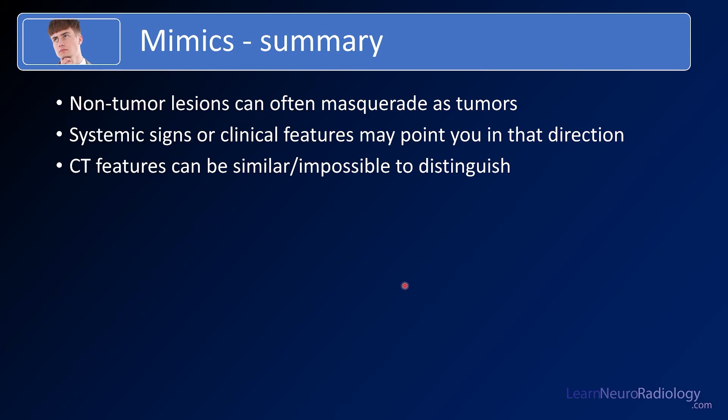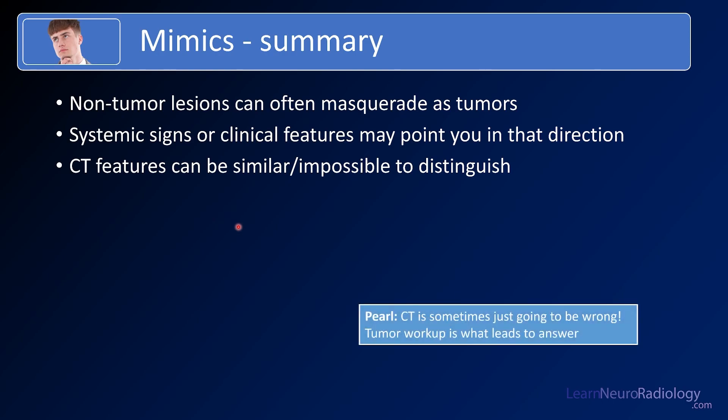In summary, there are non-tumor lesions that can masquerade as tumors. Systemic signs or clinical features might point you in the right direction — systemic signs of infection may suggest abscess. In many cases, CT features are impossible to distinguish, so your CT differential may not be right. The important thing is to get the patient to MRI, describe the mass effect and other features, and pursue tumor workup with MRI and systemic workup. Thanks for tuning in to this sixth lecture on mimics. Be sure to tune in for the last video on red flags and complications, like the video, subscribe, and check us out at LearnYourRadiology.com.